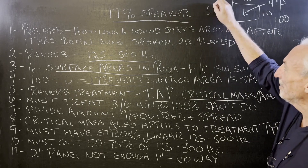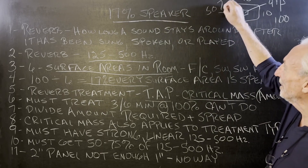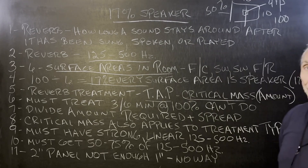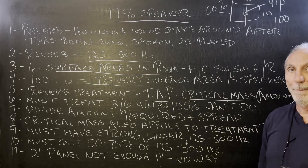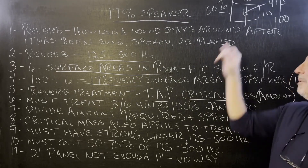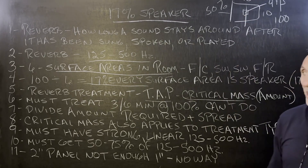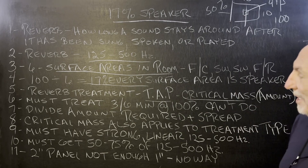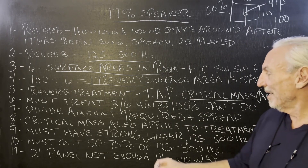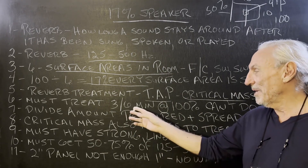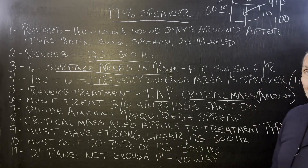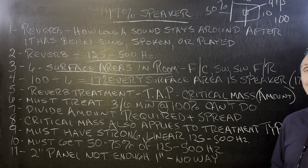Surface area coverage minimum starts at 50 percent for reverb treatment. That's why a lot of what's out there is nonsense. You must treat three out of the six surface areas at minimum, and at 100 percent coverage.